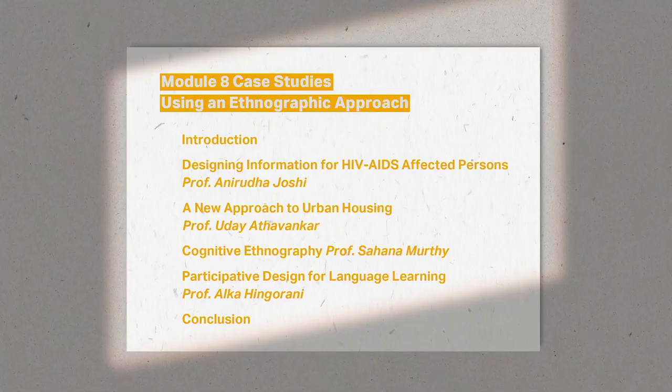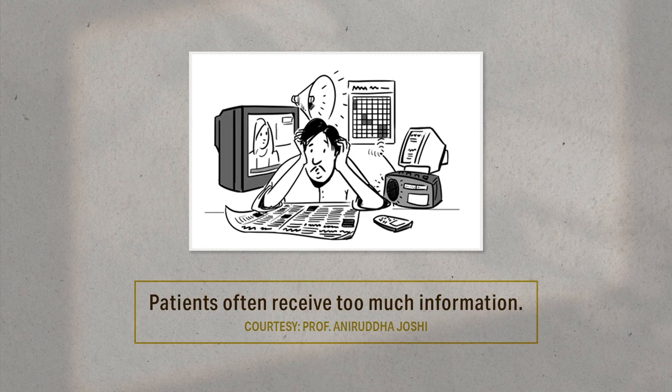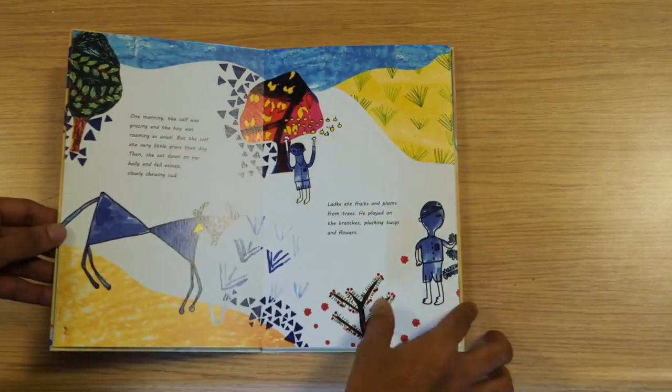Finally, we conclude our journey in module eight with a discussion on how ethnographic research offers new ways of seeing and the avenues it opens up for projects and interventions. Some of our contributors share with us case studies of projects where they have used the ethnographic approach. They introduce us to their processes and discuss what ethnographic research has brought to their area of work.